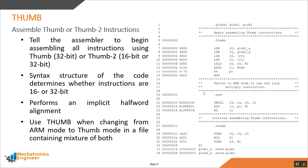As you can see in this listing file, ARM mode instructions are 32-bit wide, but when we switch to Thumb mode, the instruction size is reduced to 16-bit only.